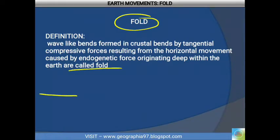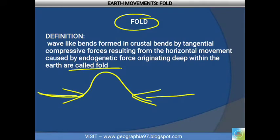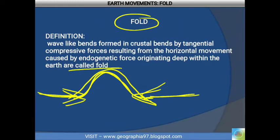When a force comes towards itself in a horizontal manner, the landform becomes a wave-like structure — that is called the fold. So it is a wave-like bend formed by tangential compressive force coming from both sides in a horizontal manner, from deep within the earth.